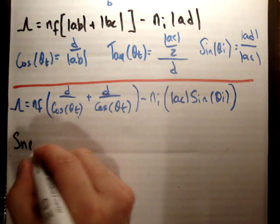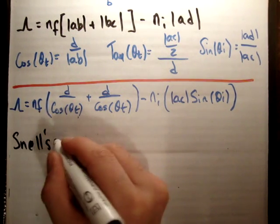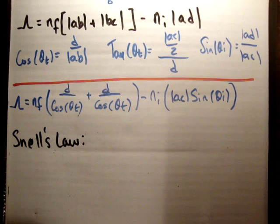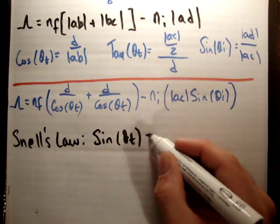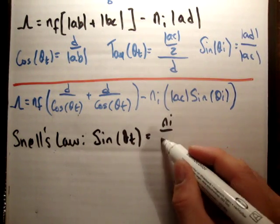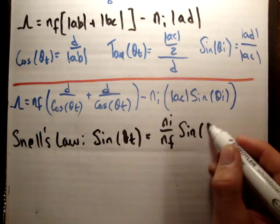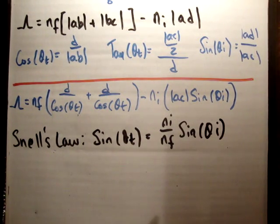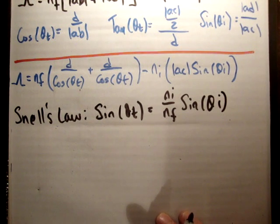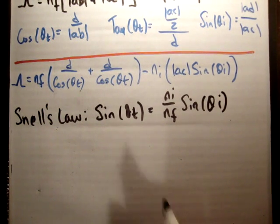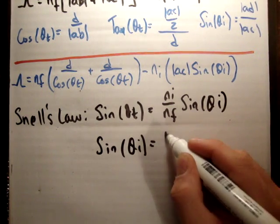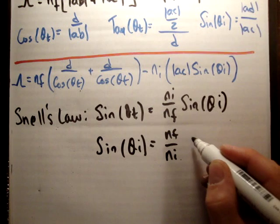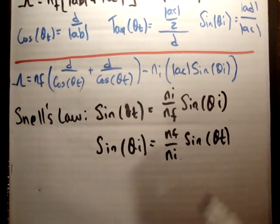However, Snell's Law, something which we're well familiar with at this stage, says that the sine of theta t equals N sub i over N sub f times sine of theta i. That's just a small bit of manipulation of Snell's Law. So we can say that the sine of theta i equals N sub f over N sub i times the sine of theta t.